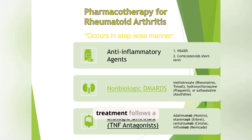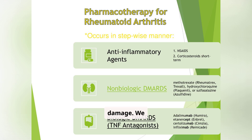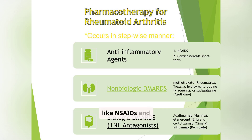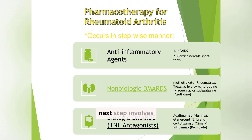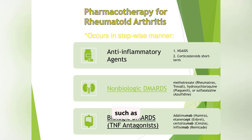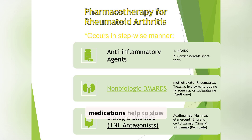Rheumatoid arthritis treatment follows a stepwise approach, aiming to control inflammation and prevent joint damage. We typically start with anti-inflammatory agents like NSAIDs and corticosteroids to provide symptomatic relief. However, these don't address the underlying disease process. The next step involves non-biologic DMARDs such as methotrexate, hydroxychloroquine, or sulfasalazine. These medications help to slow down the progression of the disease.